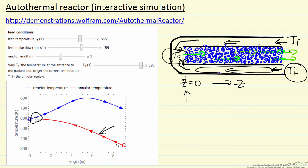What we're able to do in the simulation by using these sliders: we can change the feed temperature, namely this temperature entering the annular region. We can also change the flow rate coming into the reactor and the reactor length. Longer reactor means more reaction time, more preheat time.